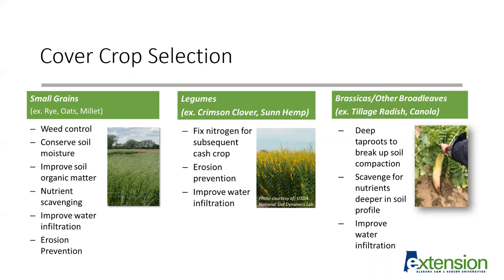Legumes such as clovers, vetches, and sunn hemp are excellent for fixing nitrogen for the subsequent cash crop. Brassicas and other broadleaves — examples being radish and canola — have deep tap roots. In some cases they can help break up soil compaction and also scavenge for nutrients deeper in the soil profile.